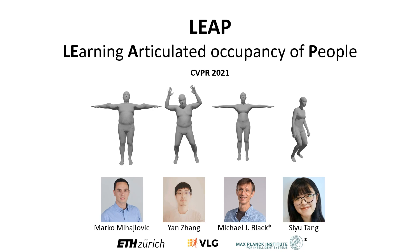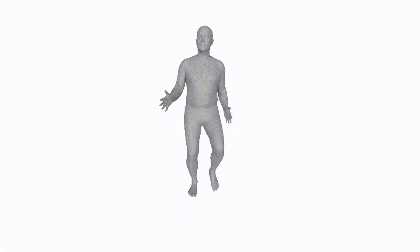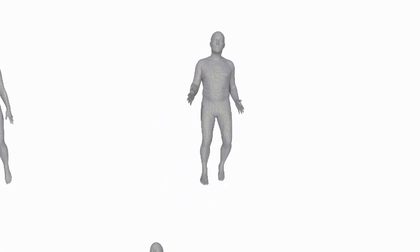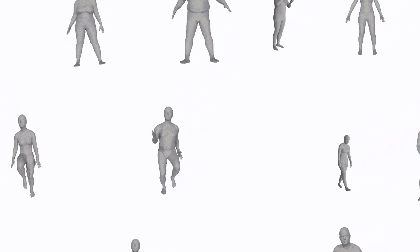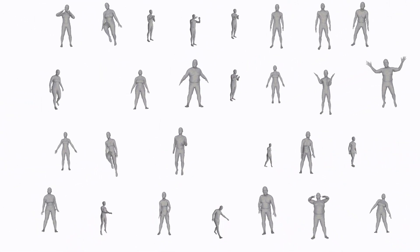We present LEAP, a neural network architecture for learning articulated occupancy of people. Our method is able to represent multiple persons and to generalize well to unseen humans. All these subjects are represented by LEAP.